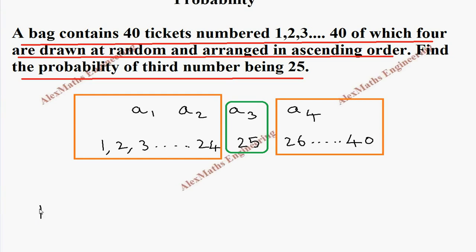So we're going to write the probability. The probability the third number is 25 equals: from that first 24 we are getting two numbers so 24C2, then from this 25 we get one number - that is the same number 25 itself - then from 26 to 40 we have 15 numbers, from the 15 we select 1 so 15C1.